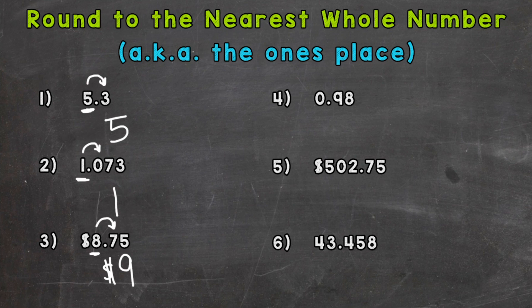Number four. We have a zero in the ones place — that's okay. We're asking ourselves: is ninety-eight hundredths closer to zero or is it closer to one? Let's take a look next door and see if we round up or stay the same. Five or more raise the score; four or less let it rest. Well, nine is five or more, so we would round up to one.